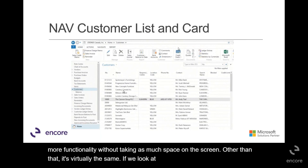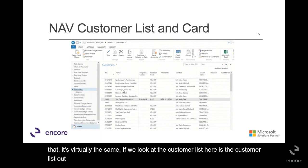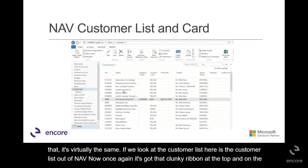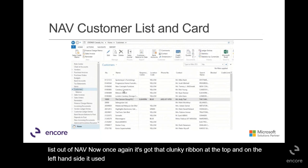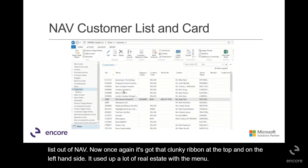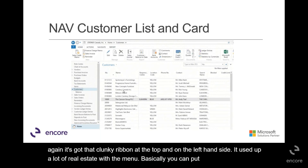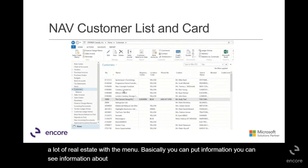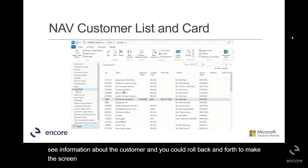If we look at the customer list, here is the customer list out of Nav. It's got that clunky ribbon at the top, and on the left-hand side it used up a lot of real estate with the menu. You can see information about the customer, but a lot of the real estate is being used by both the ribbon and the menu.